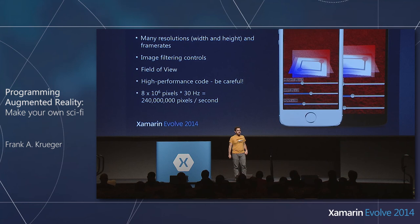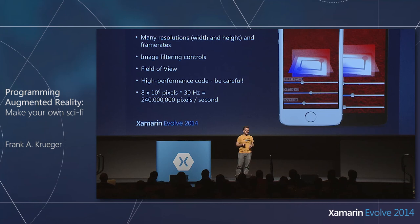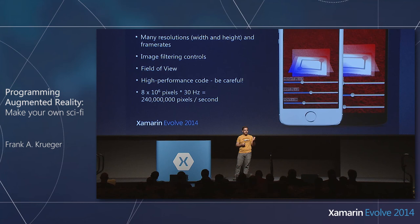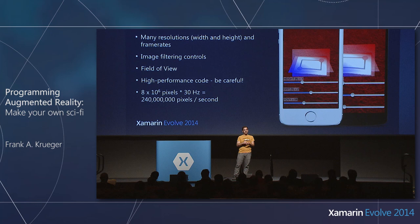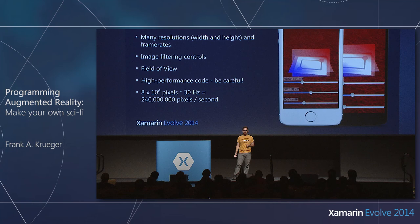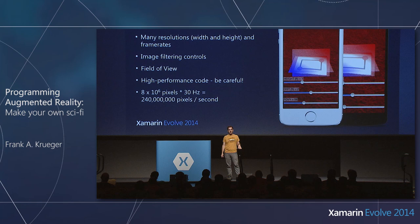We start with the video camera. Most everyone here has probably used the high-level API. There are many resolutions to deal with. In iOS 8 we can control white balance and exposure. There's a property called field of view — how much of the world it's letting in. Not only does your video have a width and height, but it has the real-world perspective angle. And we need high-performance code for the video feed — an iPhone camera is 8 megapixels, and at 30 frames per second that's 240 million pixels per second.